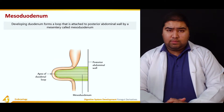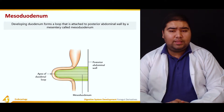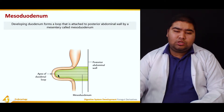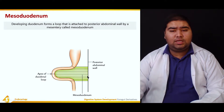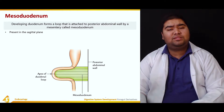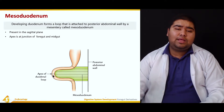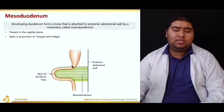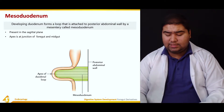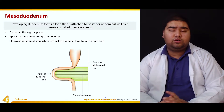The mesoduodenum is the mesentery of the duodenum. The developing duodenum forms a loop attached to the posterior abdominal wall via the mesoduodenum. It is initially present in the sagittal plane. Its apex — the highest point — is at the junction of the foregut and the midgut. There is then a clockwise rotation to the left, which makes the duodenum loop fall to the right side.